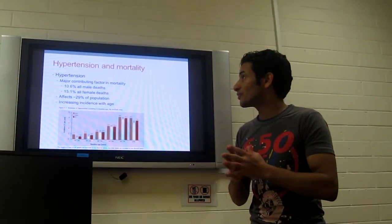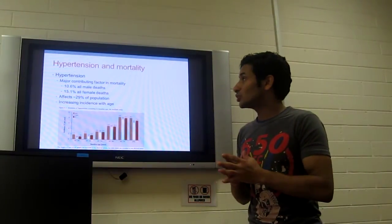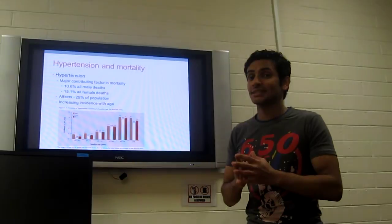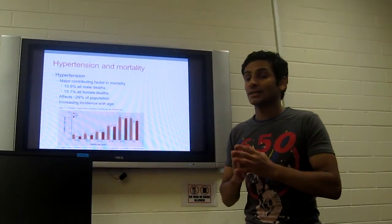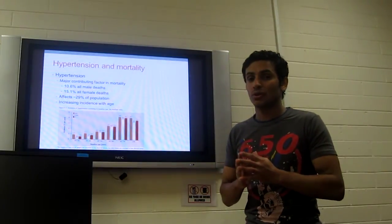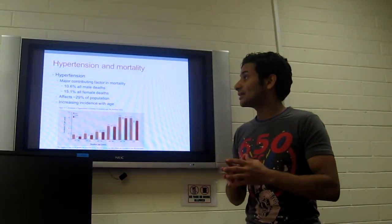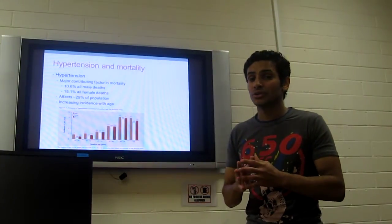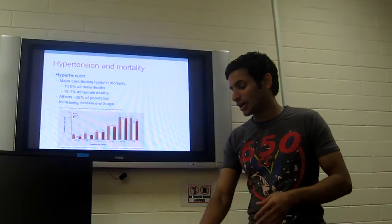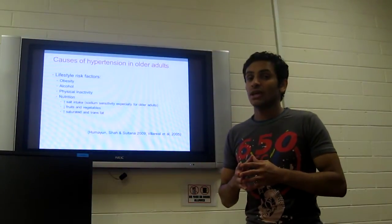Hypertension is a major contributing factor in mortality. It contributes 10.6 percent of all male deaths and 15.1 percent of all female deaths, and it affects around 29 percent of the whole population in Australia.